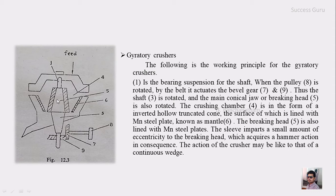This is the crushing chamber — number 4 — which is in the form of an inverted hollow truncated cone, the surface of which is lined by Mn (manganese) steel plates. This lining is also known as the mantle.